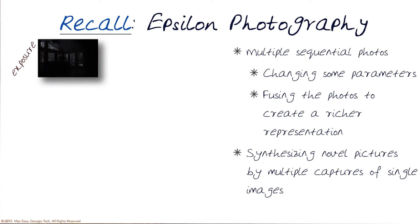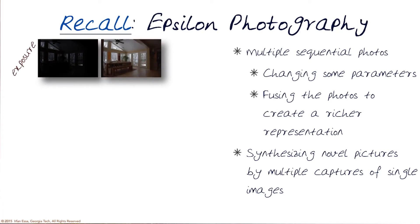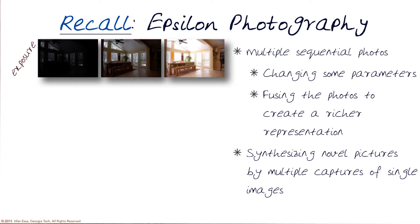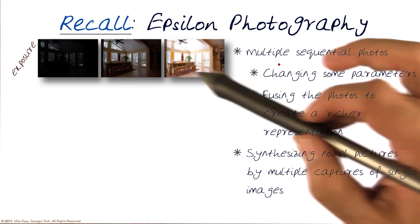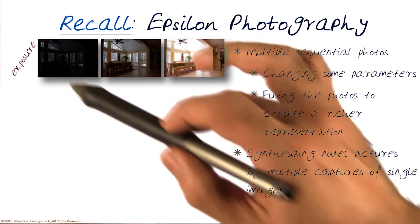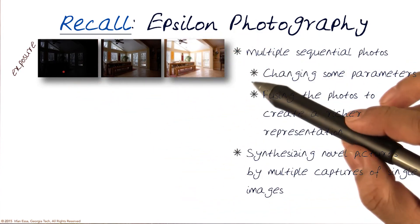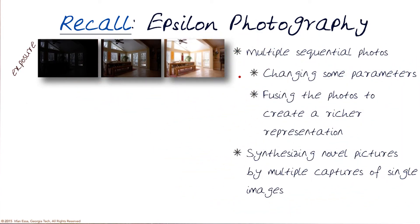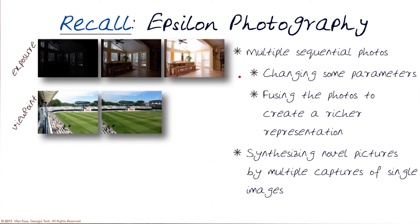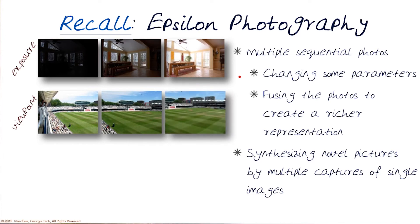We looked at a variety of examples. We can actually change the exposure — this was an example of what we did to create HDR images. By fusing three different exposures of an image, we were able to generate an HDR image. Another example could be the viewpoint, where we change the camera parameters by changing the viewpoint, and then fusing them together we can create a panorama.